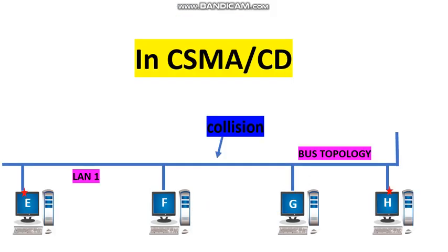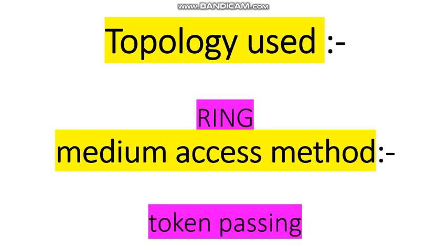In the previous video, I explained the medium access method in Ethernet, that is CSMA/CD. The problem with CSMA/CD is that collisions may occur when two or more stations are transmitting data at the same time. To avoid collisions, in a token ring network, we use the token passing access method.